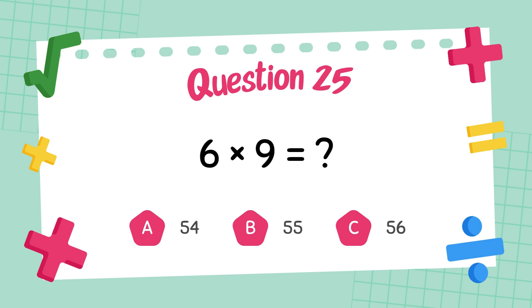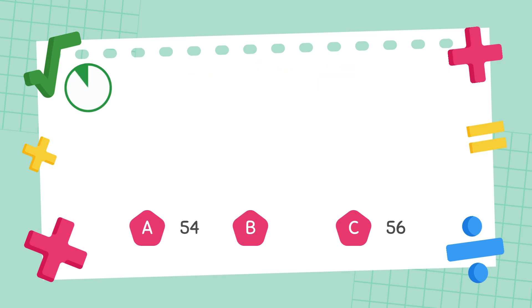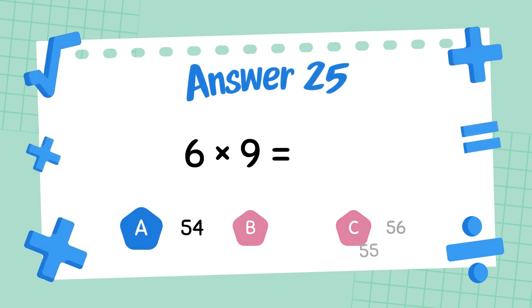What is six times nine? The answer is fifty-four.